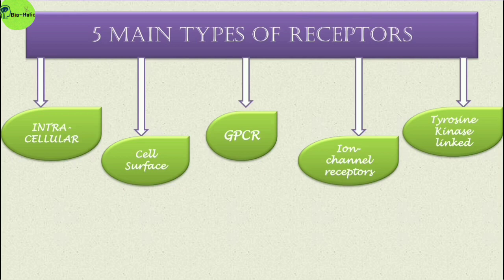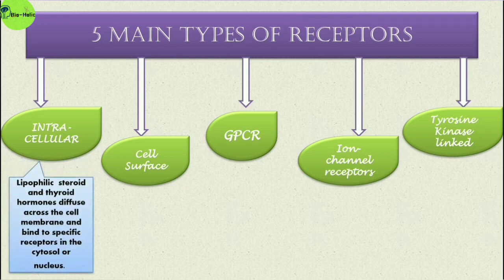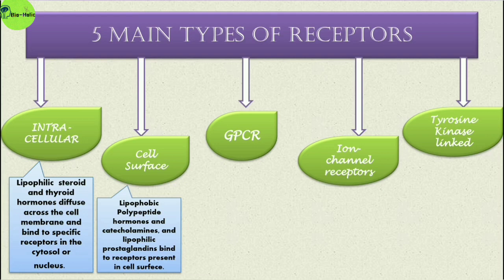Intracellular receptors: lipophilic steroid and thyroid hormones diffuse across the cell membrane and bind to specific receptors present in the cytosol or nucleus — these are known as intracellular receptors. Cell surface receptors are present on the surface of the cell; lipophobic polypeptide hormones, catecholamines, and lipophilic prostaglandins bind to receptors present in the cell surface.